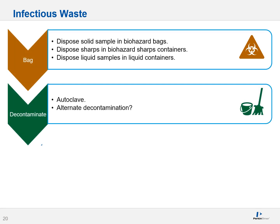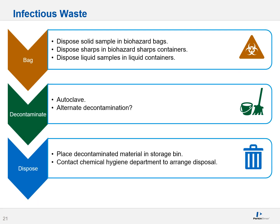Step two: decontaminate. Use autoclaving, or an alternate decontamination such as a strong acid or base, bleach, or a combination of the above. You can then dispose of the decontaminated material in a storage bin. Contact your chemical hygiene department or equivalent to arrange disposal — they may have special disposal sites, containers, or areas where your decontaminated waste must be placed.